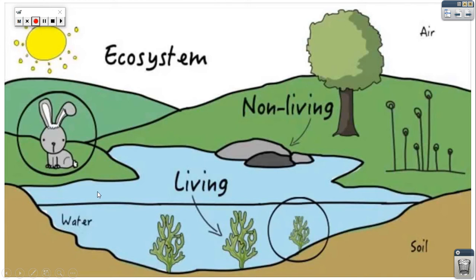The rabbit will also drink from the water, so there is a relation between the rabbit and the water. The rabbit also breathes oxygen from the air, so there is a relation between the rabbit and the air. The tree will absorb water and nutrients from the soil, and also absorb sunlight and carbon dioxide from the air.